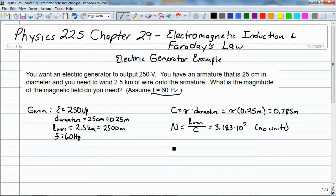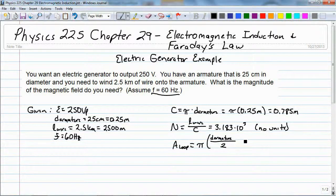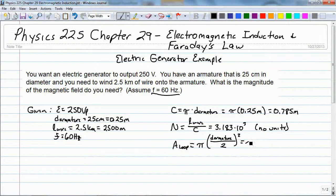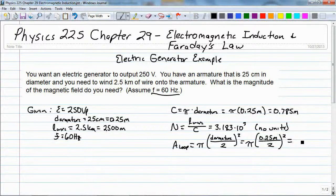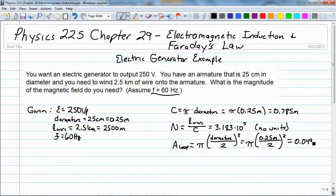Now the area of the loop is going to be equal to pi times the diameter of the armature, divided by 2, and we're going to square that. And that comes out to be 0.049 meters squared.